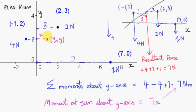This tells us that the center of gravity must lie on the line x equals 1 — a vertical line passing through 1. But whereabouts on this line is the center of gravity? We want to pinpoint the center of gravity exactly. So now what we do is consider the moments of the system about the x-axis.